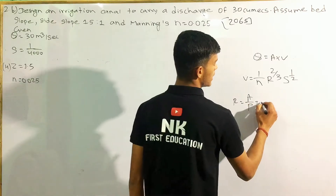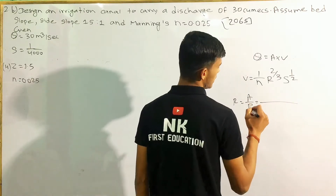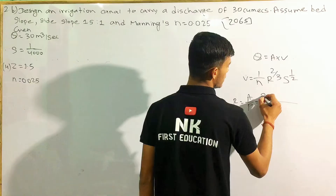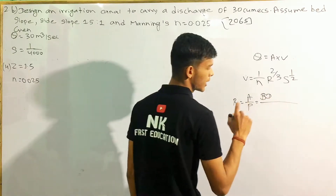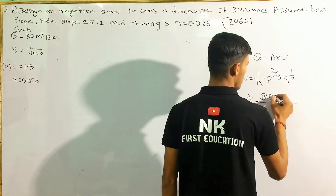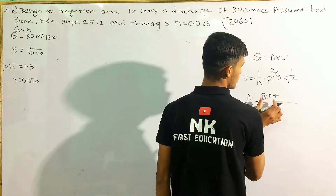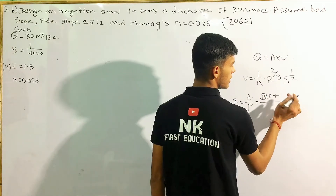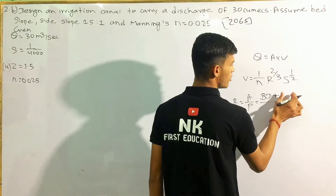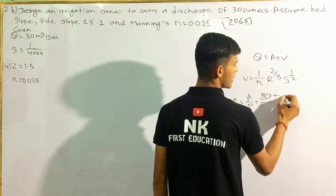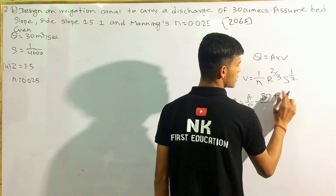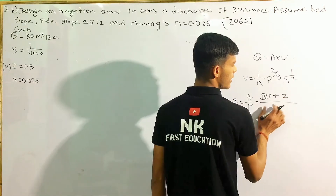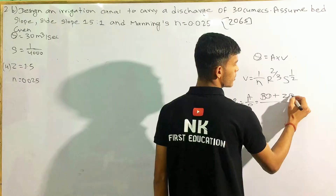The area formula for a trapezoidal channel is A = BD + ZD². This includes the rectangular part B times D, plus the triangular part Z times D squared.